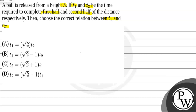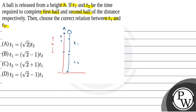Let us say this is height h. This is the ground. This ball is released from point A. The first half of the distance takes time t1 and the second half takes time t2. So this is h by 2 and this is also h by 2. What is the relation between t1 and t2?